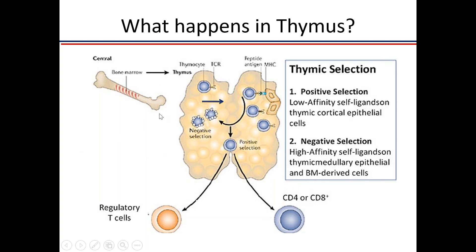What happens in the thymus? All cells are initially generated in the bone marrow where hematopoiesis occurs. Pro-thymocytes destined to become T cells enter the thymus and first undergo selection in the cortex. Positive selection occurs in the cortex: T cells must be able to recognize that person's own MHC molecule. A T cell which cannot recognize its own MHC is useless and gets destroyed.